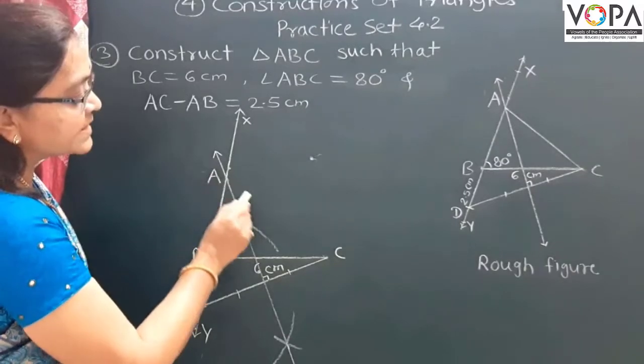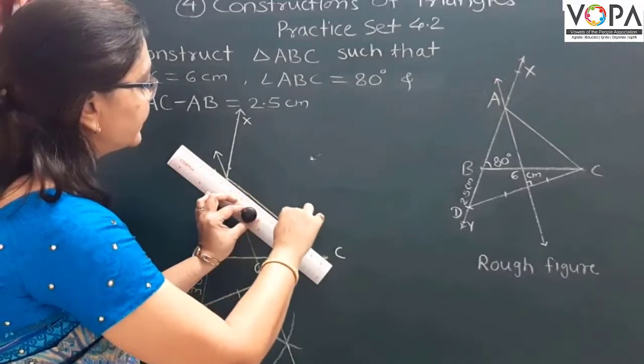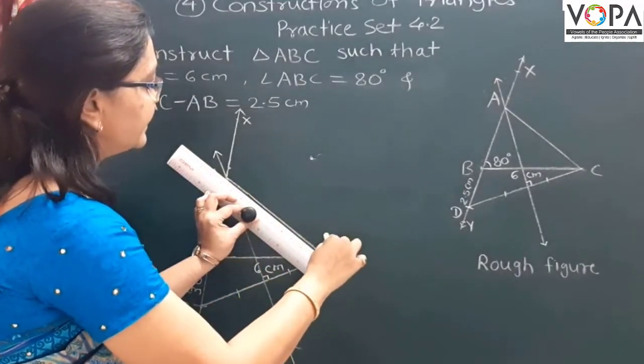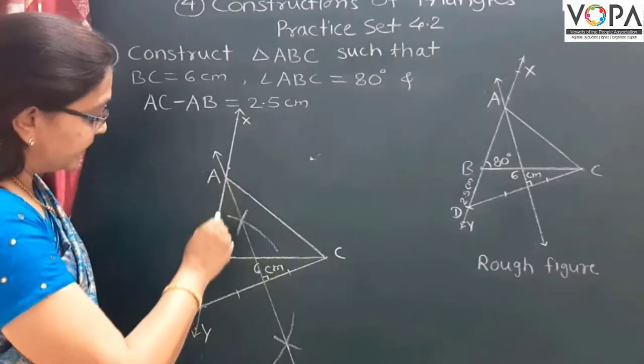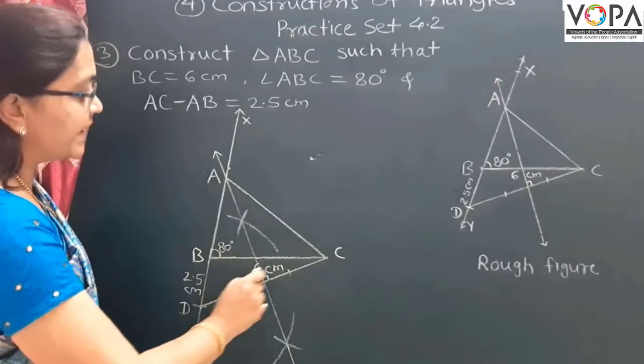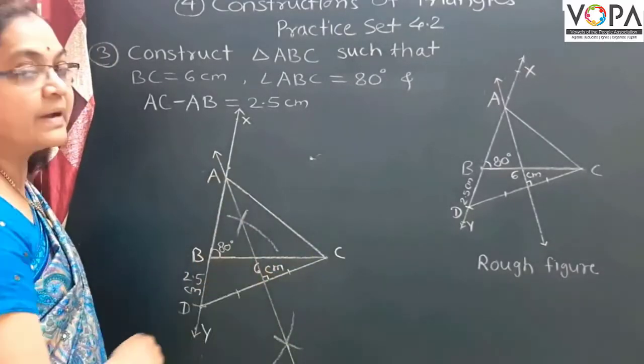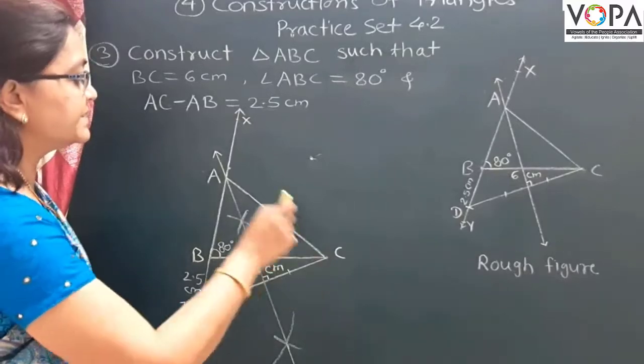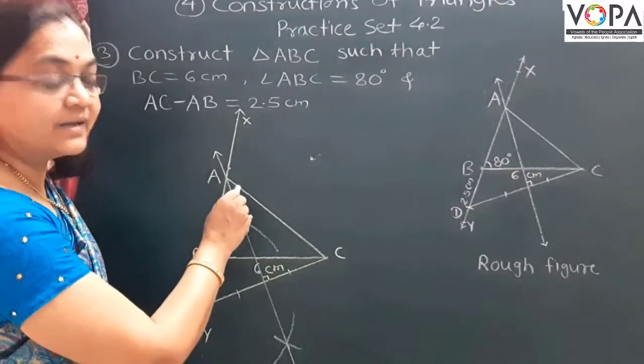Draw segment AC. Join these two points A and C. This is our segment AC. This point A is equidistant from point D and C. That's why it is from the perpendicular bisector of segment CD.